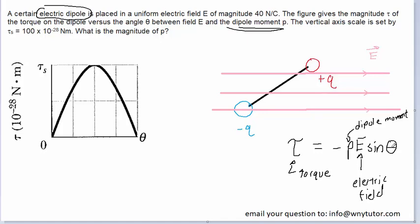Then we have theta, which represents the angle between the dipole moment p and that electric field E. Now we haven't drawn the dipole moment, but customarily the dipole moment will point from the negative charge towards the positive charge. So we can label that p, and therefore the angle would be represented right here.